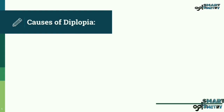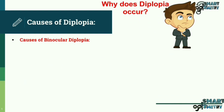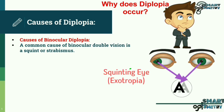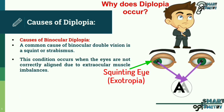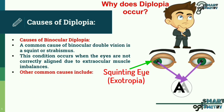Causes of Diplopia: Why does diplopia occur? A common cause of binocular double vision is a squint or strabismus. This condition occurs when the eyes are not correctly aligned due to extraocular muscle imbalances.